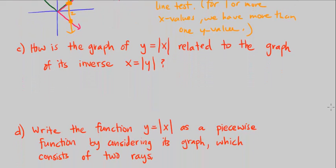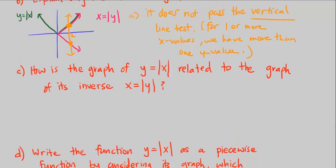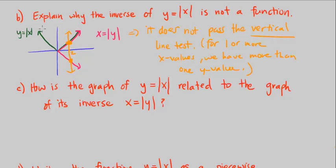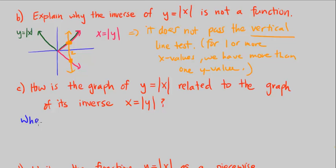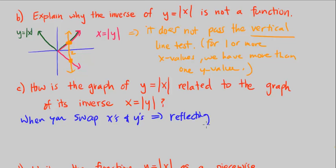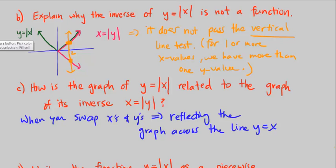Let's go into part C, which asks how the graphs are related. When you swap x's and y's, that is the same thing as reflecting the graph across the line y is equal to x. Let me draw the line y equals x in yellow dashes. If we reflect the graph, you can see this ray reflects across this line and goes down here.